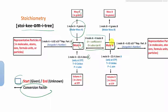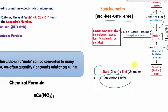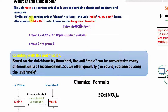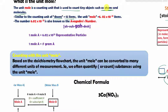That unit is called the mole. The unit mole is a counting unit used to count very tiny objects such as atoms and molecules. A comparison would be the counting unit of dozen — when we count eggs, we count by the dozen because it is a lot faster than counting one by one. Similarly, when we count atoms and molecules, we count in terms of mole, so the numbers we write down are much smaller rather than using very large numbers.